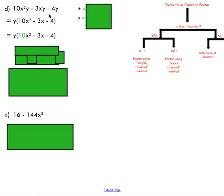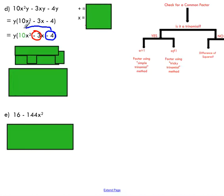Here are a couple more examples. The first one is a strange expression with two variables — don't be intimidated. Jump to your flowchart and check for a common factor. In this case, each term has a y, so we common factor out that y, which really simplifies things. This is now just a trinomial. Following the flowchart, it is a trinomial where the a value does not equal one, so we're going to use the tricky trinomial method.